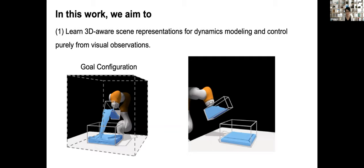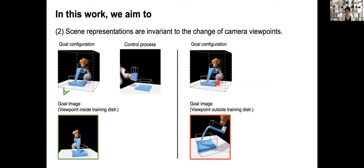In this work, we desire to learn models for dynamic 3D scenes purely from 2D visual observations and use the learned representation to do control tasks.